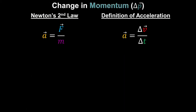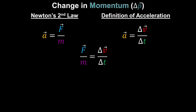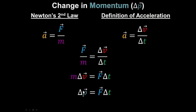A change in velocity means the object was accelerating. The definition of acceleration is change in velocity over an interval of time. But Newton's second law says acceleration equals the sum of forces divided by mass. Both of these equal acceleration, so we can set them equal to each other. Cross-multiplying gives mass times change in velocity equals force times change in time. This means change in momentum can also be calculated from how much force was applied and for how long.